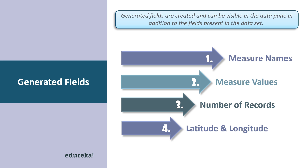Measure names and measure values are two fields created in Tableau by default. These fields are created when a data set is imported into Tableau, so you can go into the data pane of the worksheet and view the fields. A measure name consists of all names of a measure present in a data set and is always present at the end of the dimension.